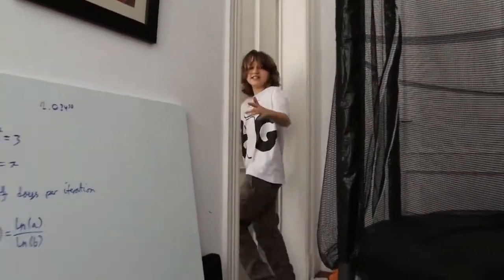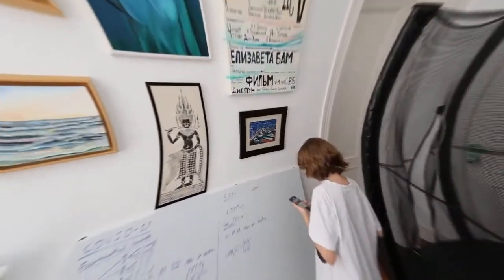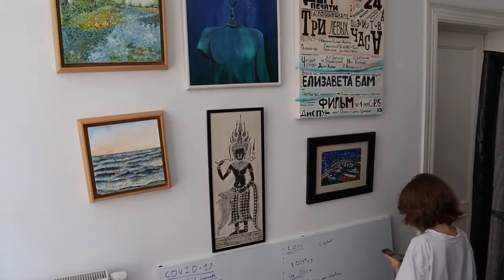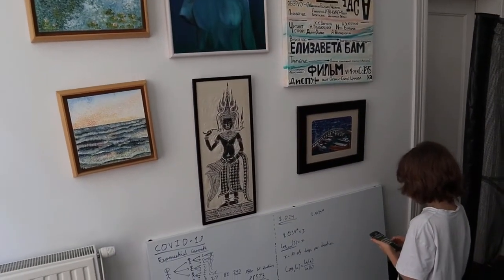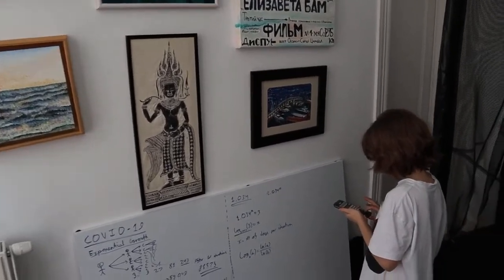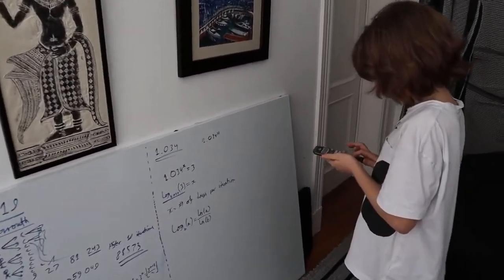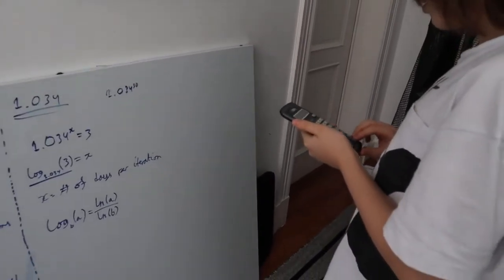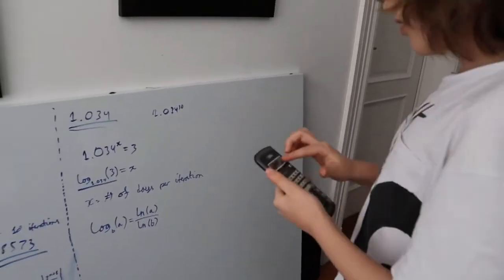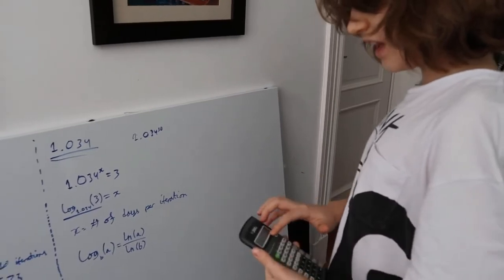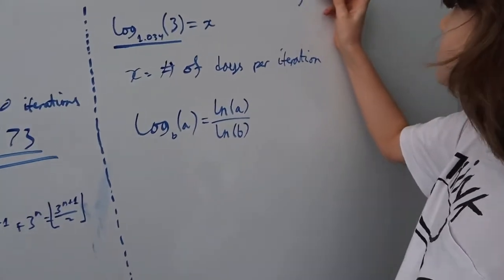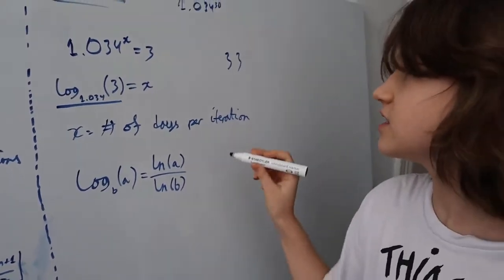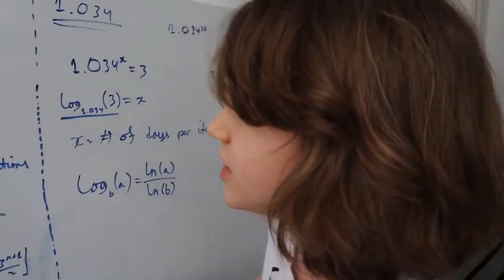Three natural log divided by 1.034 natural log equals 32.858. Let's call it 33. So 33 days. It takes 33 days in order for one iteration to be completed.